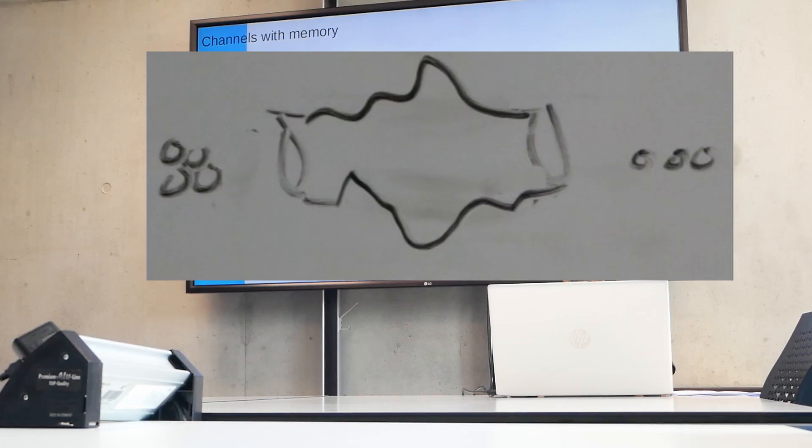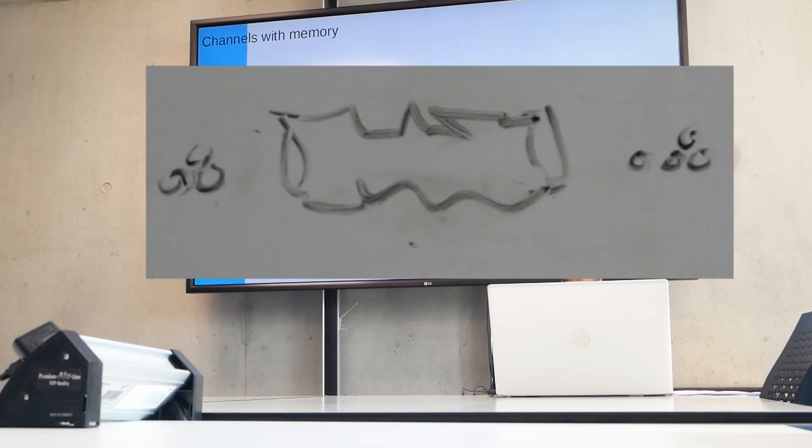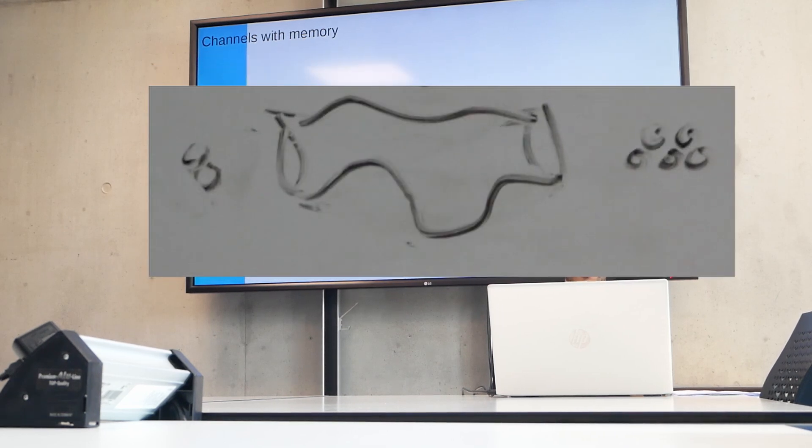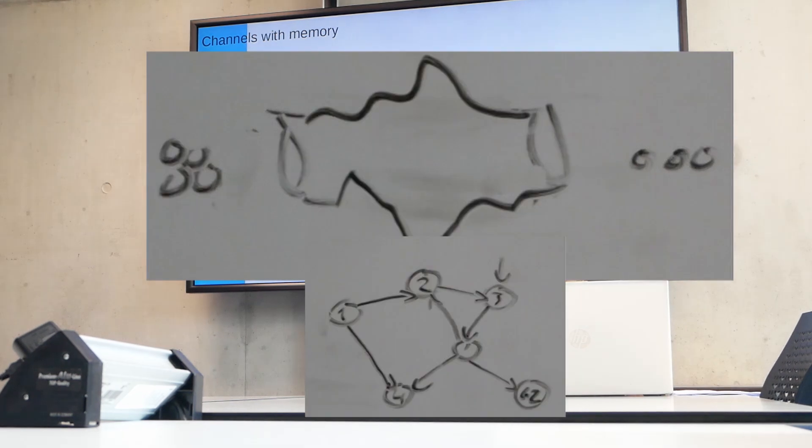Suppose you have this channel here. And it's a binary channel, so it takes as input bits and it outputs bits. As every bit passes through the channel, its memory state changes. It becomes a different channel. And you can represent this by this finite state machine.